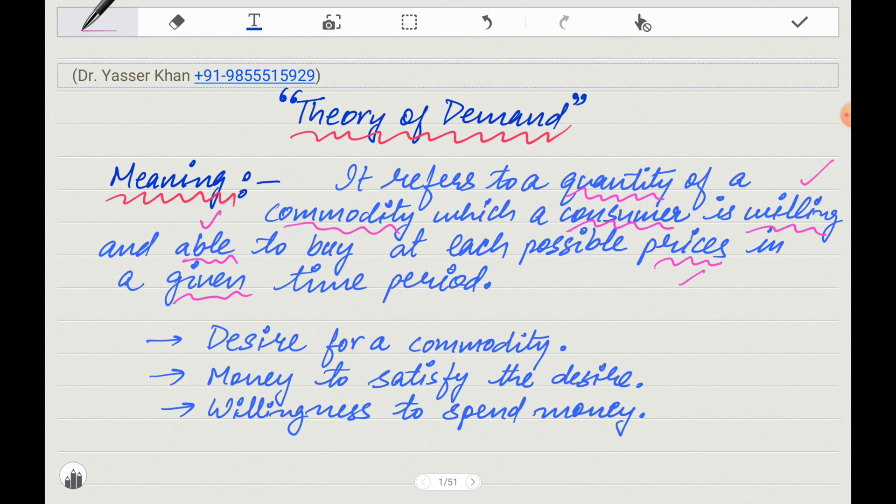For Demand, there are basically three things. The first is Desire for a Commodity. The second is Money to Satisfy the desire. The third is Willingness to Spend Money. So when these three things are mixed, there is demand.